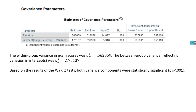Looking at the estimates of covariance parameters, these are the variance estimates: the level 1 residual variance and the level 2 variance for the intercepts. Both of these are again statistically significant.